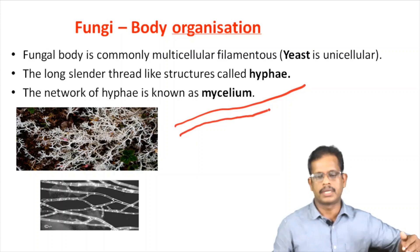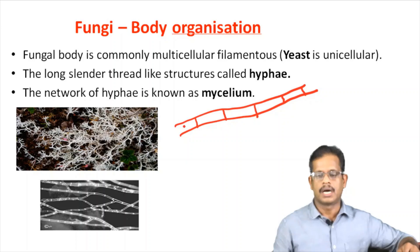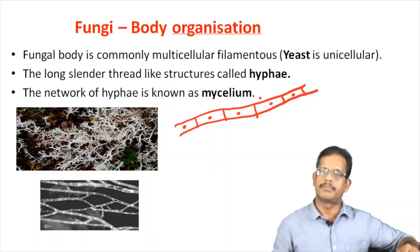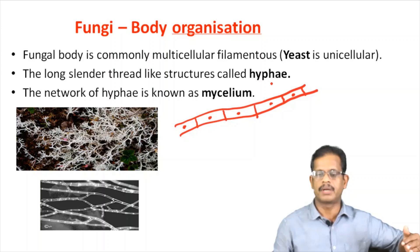If we look under the microscope, we can see the filaments and the cell wall. This is multicellular. This is a filamentous structure. The single filament of fungi is called a hypha.